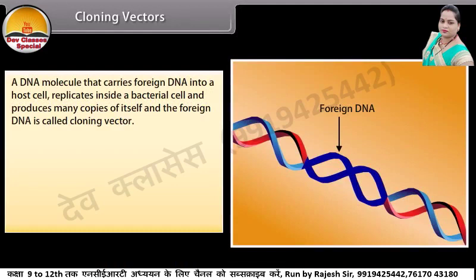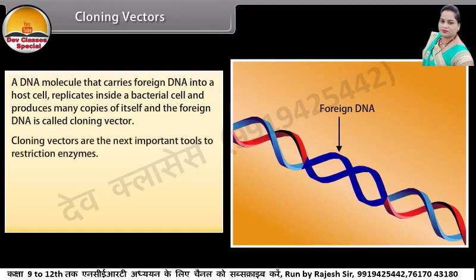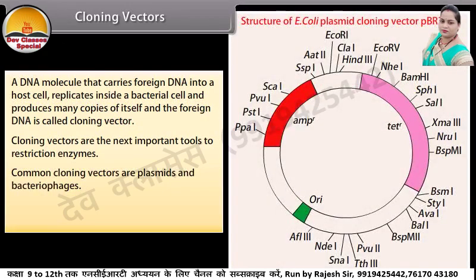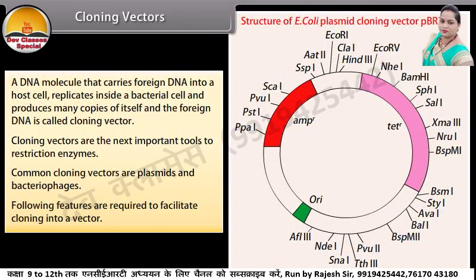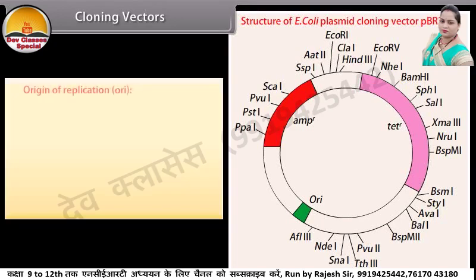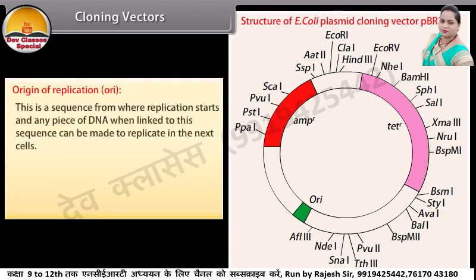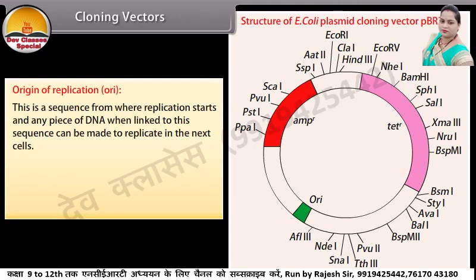A DNA molecule that carries foreign DNA into a host cell, replicates inside a bacterial cell, and produces many copies of itself and the foreign DNA is called a cloning vector. Cloning vectors are the next important tools after restriction enzymes. Common cloning vectors are plasmids and bacteriophages. Following features are required to facilitate cloning into a vector. Origin of replication: this is a sequence from where replication starts, and any piece of DNA when linked to this sequence can be made to replicate in the host cells.